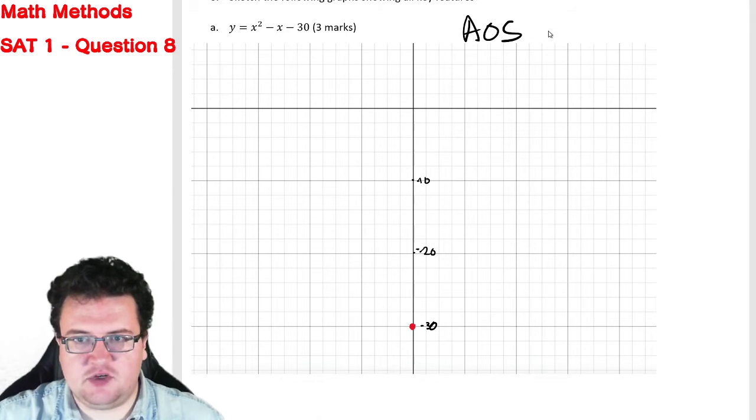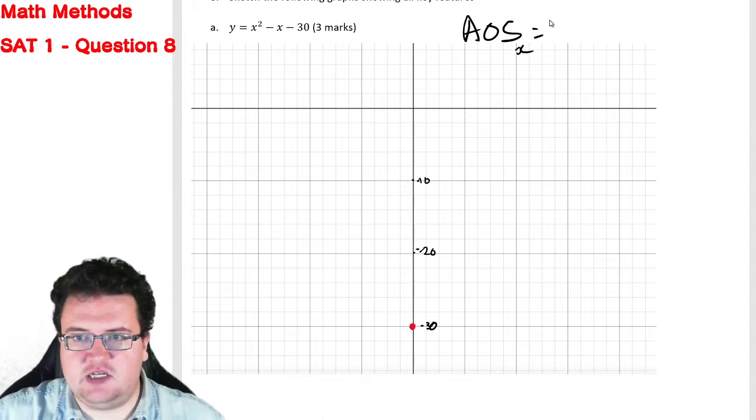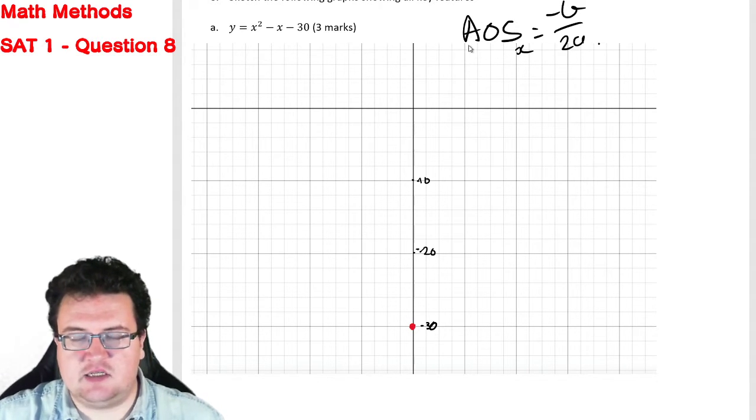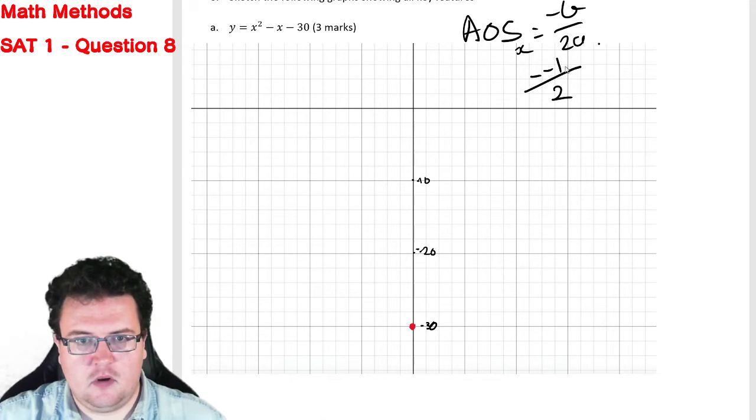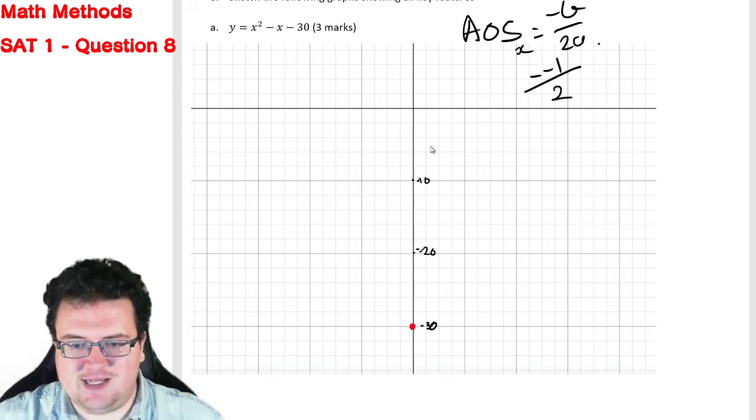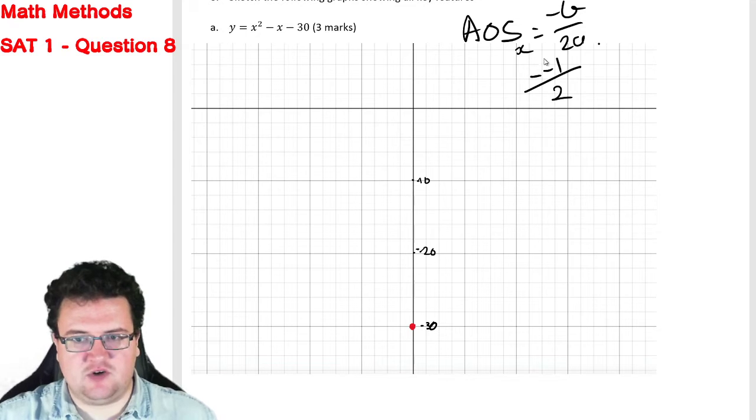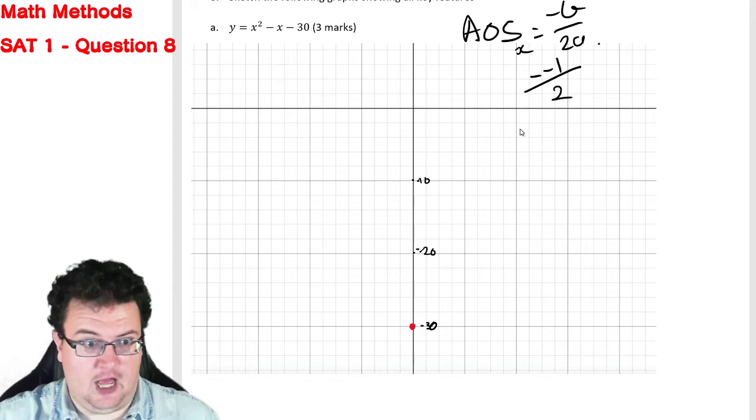The axis of symmetry, the x value, the axis of symmetry is equal to negative b over 2a. So the axis of symmetry is going to be at minus minus 1 over 2. So it's negative of negative 1 divided by 2, which means that the axis of symmetry is going to be at a half.